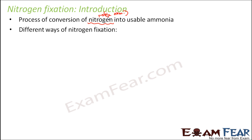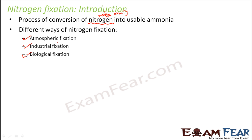There are three different ways of nitrogen fixation: atmospheric fixation, industrial fixation, and biological fixation. Atmospheric fixation and industrial fixation are not that useful because the amount of nitrogen converted is very less and they also have some negative impact on the atmosphere. Biological fixation is the most beneficial method, which is why people often call it biological nitrogen fixation.